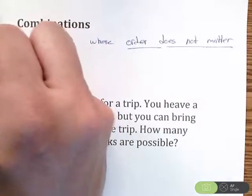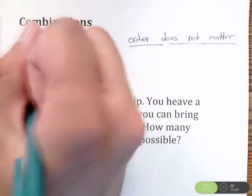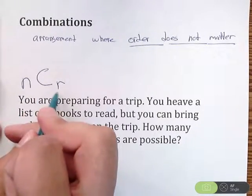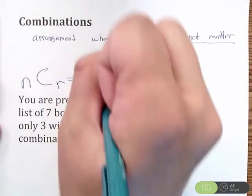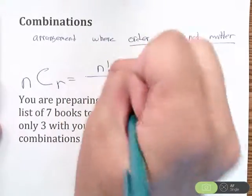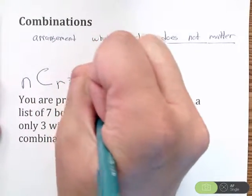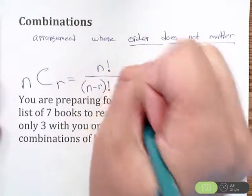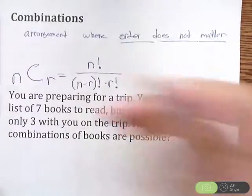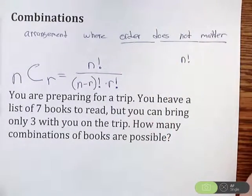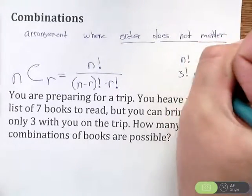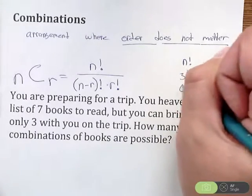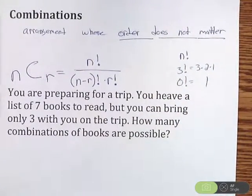We do have a formula for this. We have n total objects, C for combinations, and we're going to choose r of them. n choose r. We're going to have n factorial in the numerator. In the denominator, we're going to have n minus r factorial times r factorial. If you're not sure what factorial the exclamation point is, for example 3 factorial, that's 3 times 2 times 1. Do know there is a special case where you have 0 factorial, which is just 1.